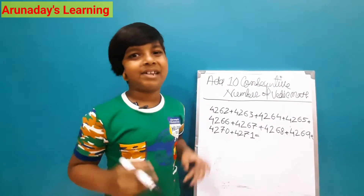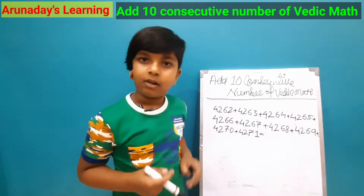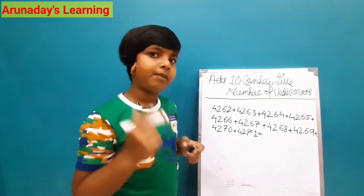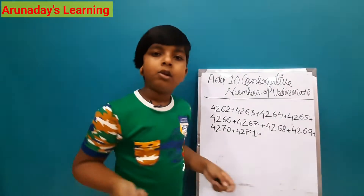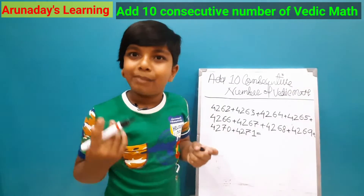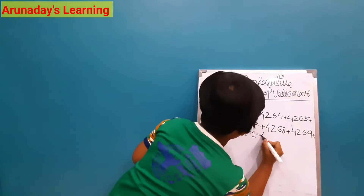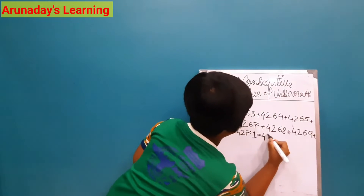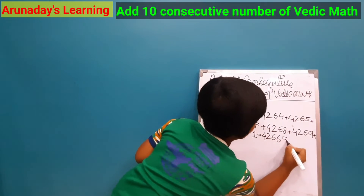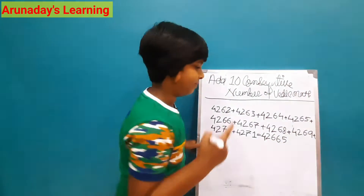Last and final example — this is 4 digits. Now I will show this 4-digit sum. Previously we did 3 digits, so why can't we do 4 digits? It is also very simple. The answer will be 4, 2, 6, 6, 5 — you can say 4, 2, double 6, 5. Let's verify it with the calculator.